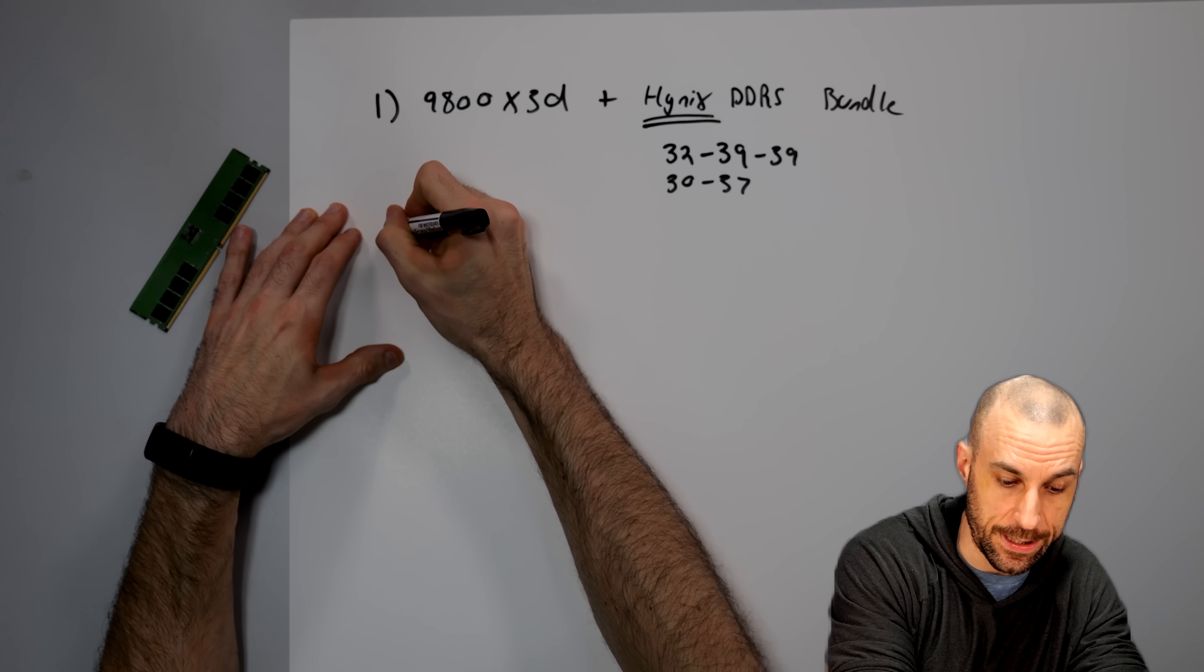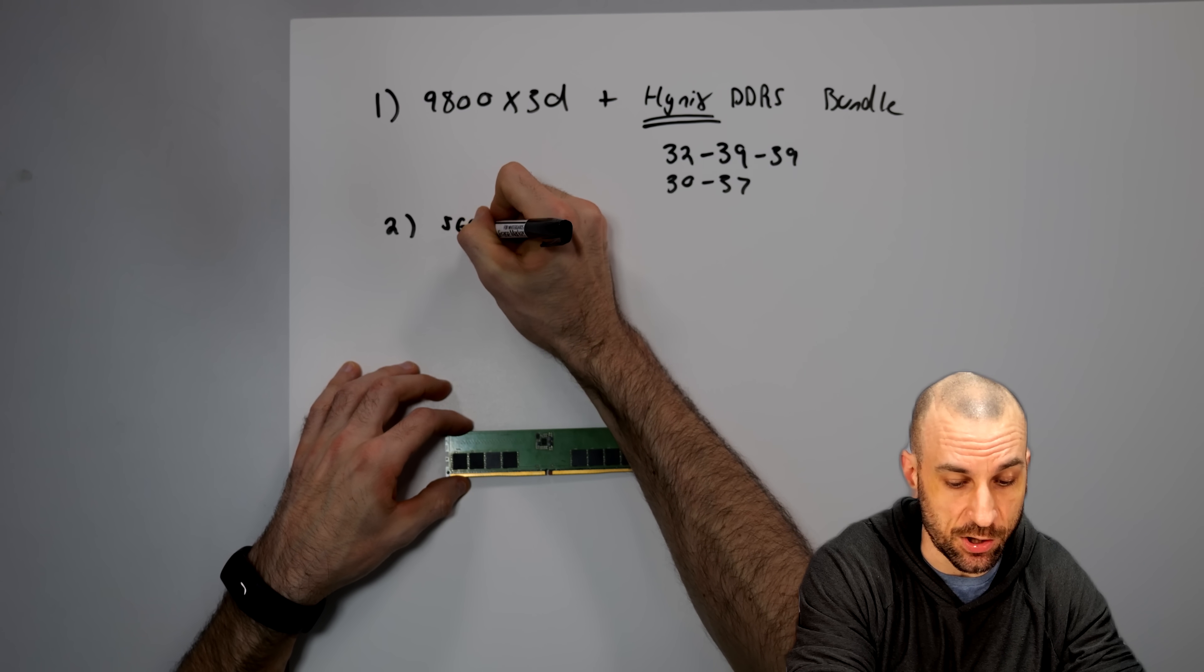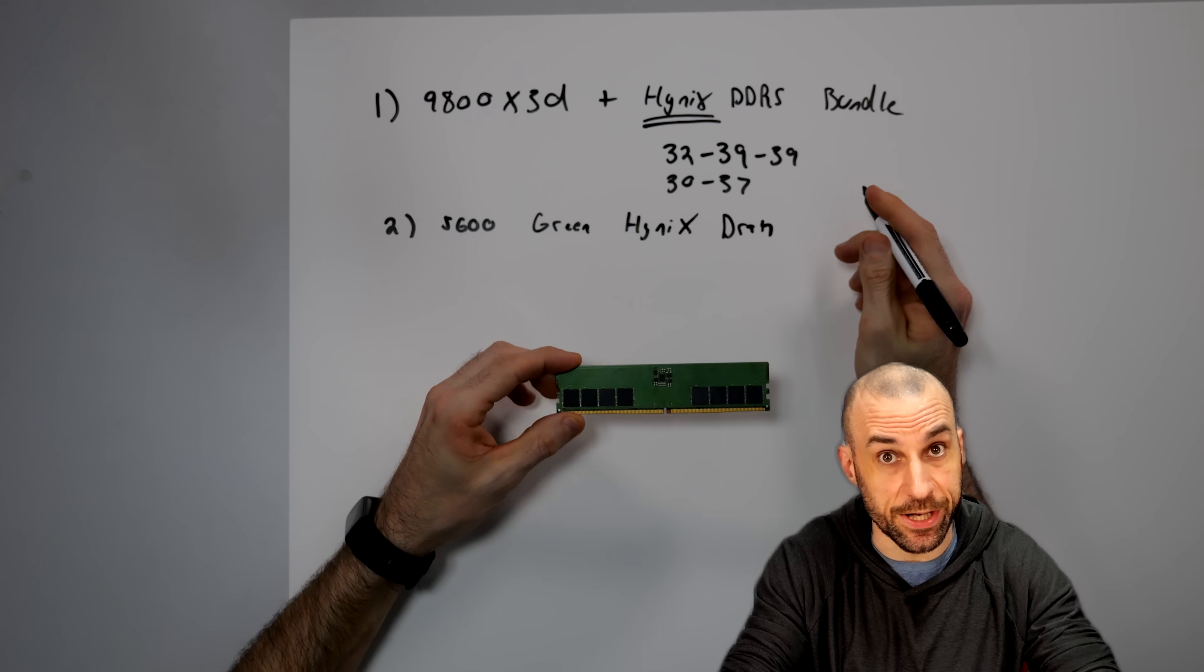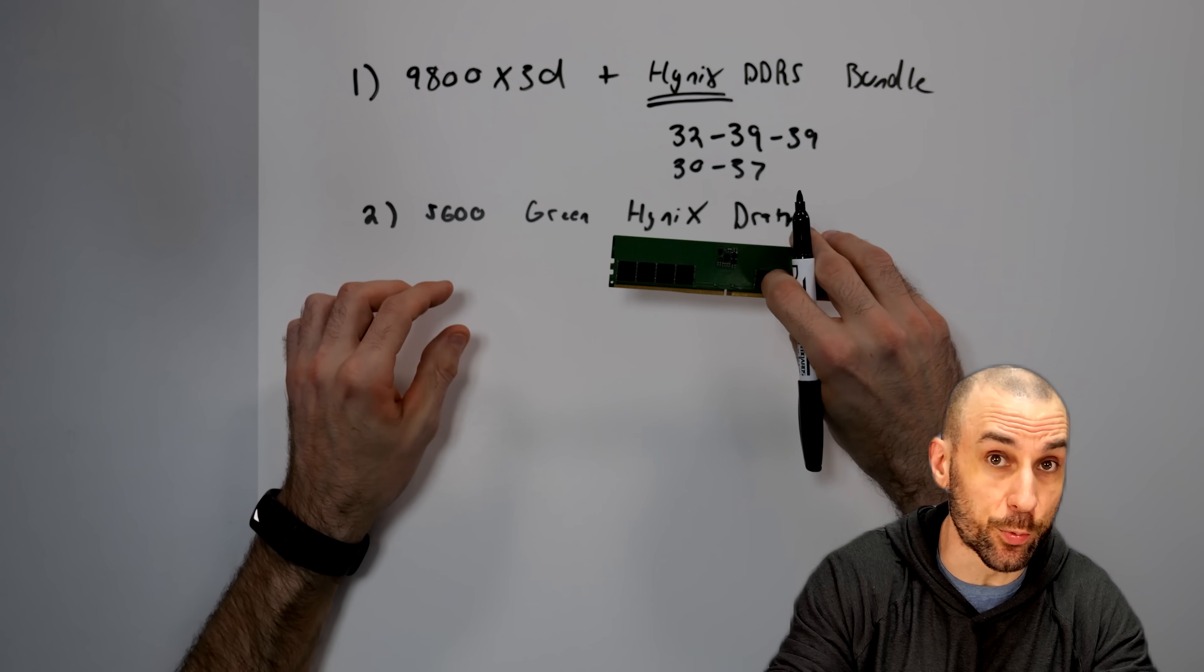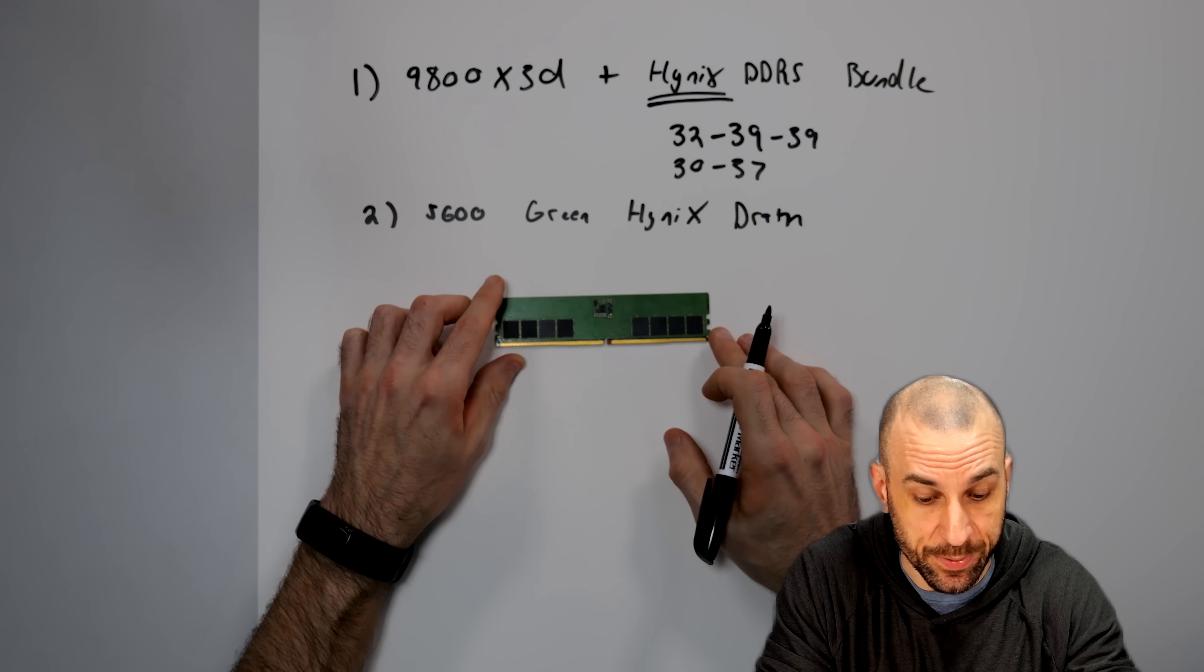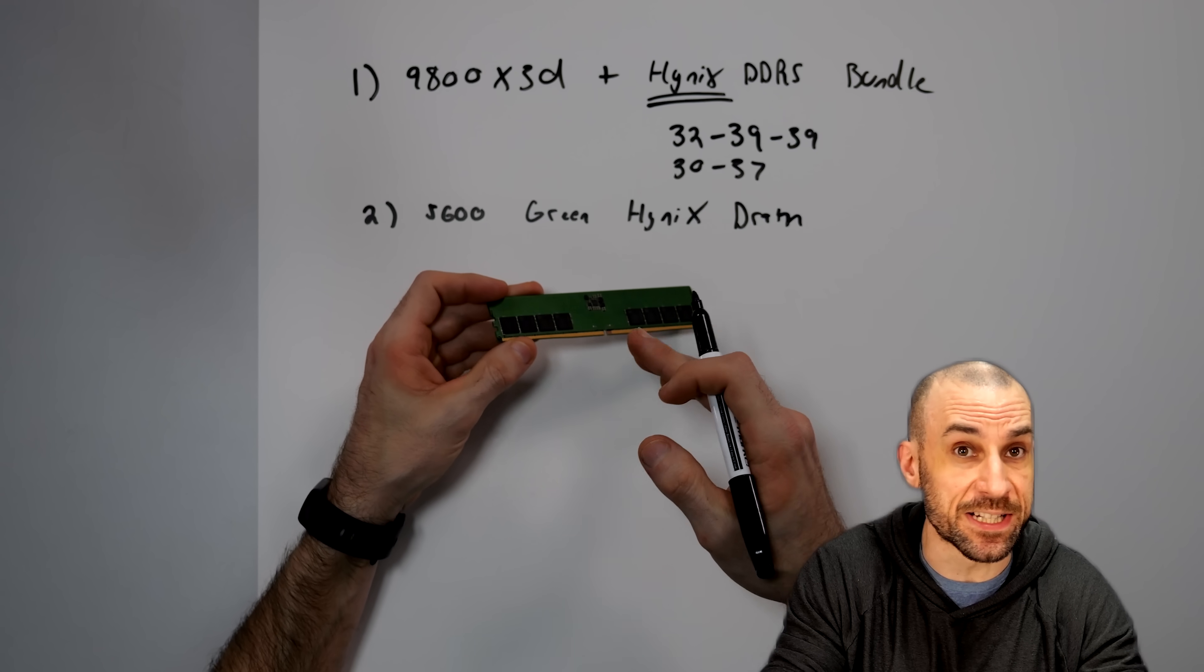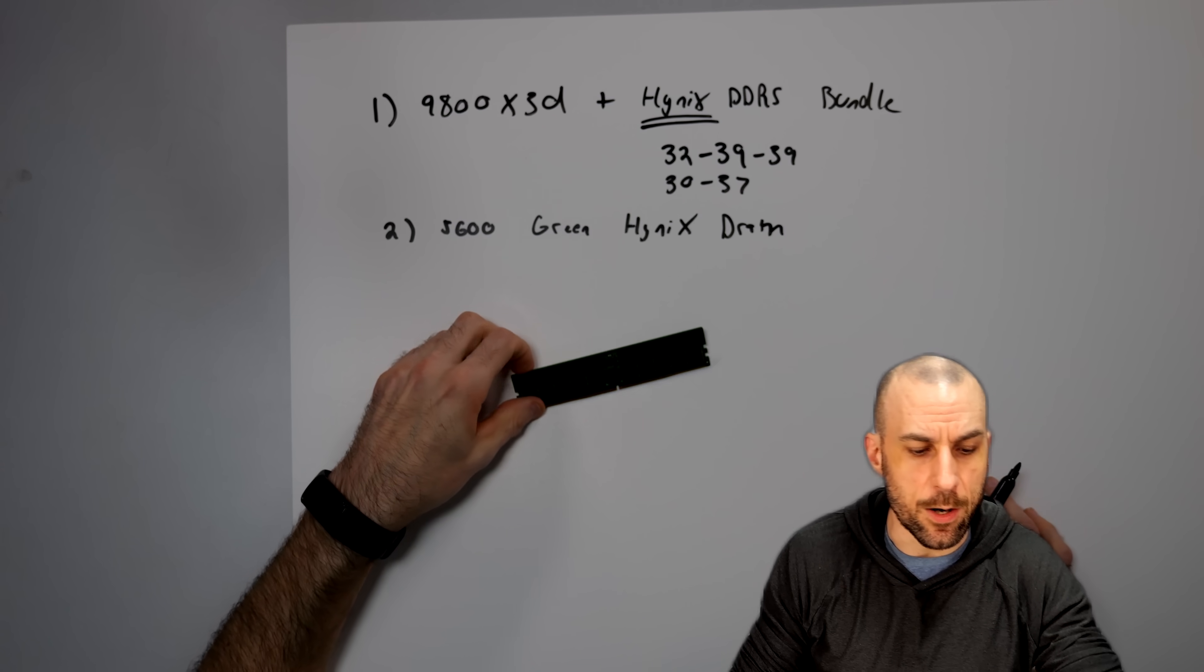Number two on the list would be the exact same thing, except you go and you hunt 5600 green Hynix DRAM, these sticks right here. The reasons why are basically the exact same. This one does require that you know how to tune them because they don't come with an expo and they don't come with an XMP, but you can also just put a heat sink on them, learn how to tune them and then overclock the piss out of them. And then this can last you throughout the entire shortage for the next three years.